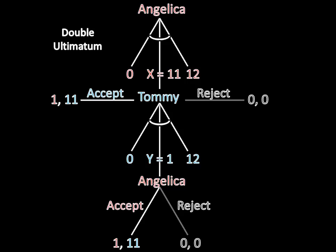Finally, we check to see what happens when X equals 11. Now Tommy is indifferent between accepting Angelica's offer and making a counteroffer. Note that the equilibrium payoffs here are equal when X was less than 11.